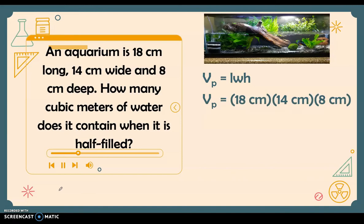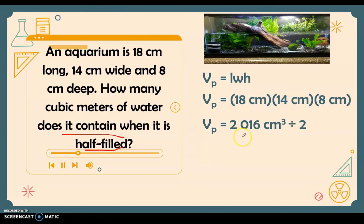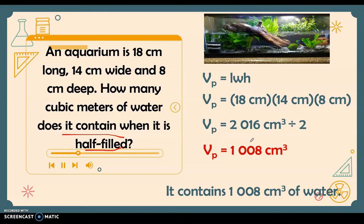That gives us the full volume of the aquarium: 2,016 cubic centimeters. But since the aquarium is only half filled, we divide by two. So the volume of water it contains is 1,008 cubic centimeters.